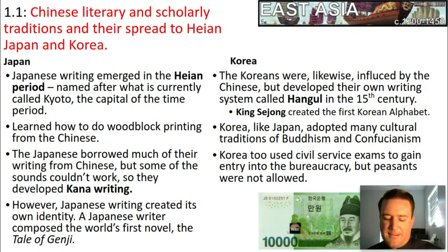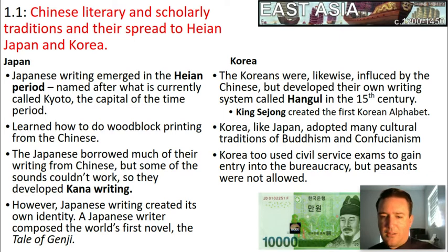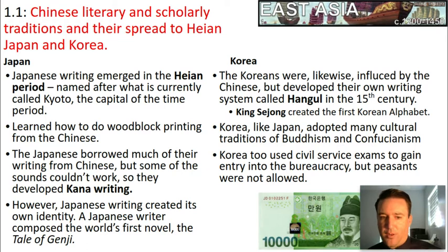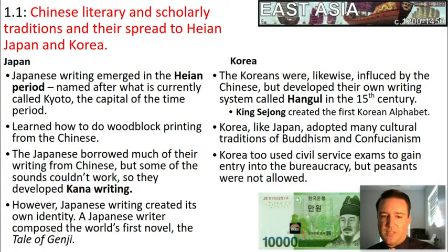Many of the sounds used in Chinese characters didn't necessarily match the sounds of the Japanese language, so they created their own writing called kana. From there they created their own literature and cultural identity. One of the world's first novels, 'The Tale of Genji,' was written by a Japanese writer in kana. This is an important example: even though they were influenced by China, they also developed their own distinct cultural identity.